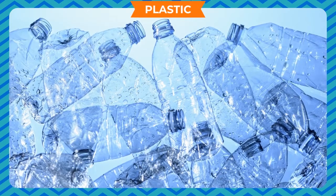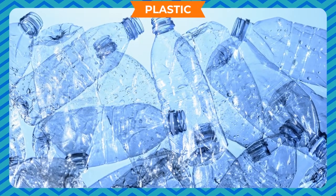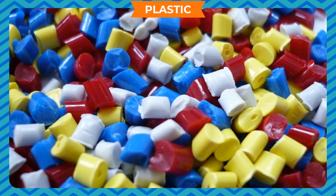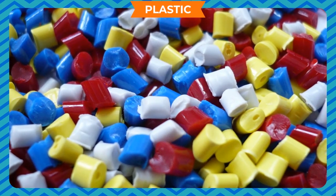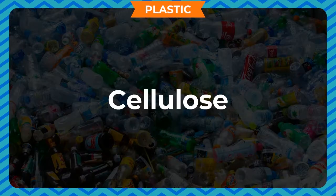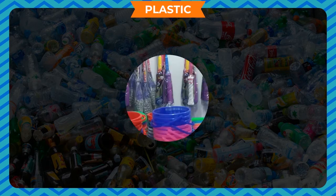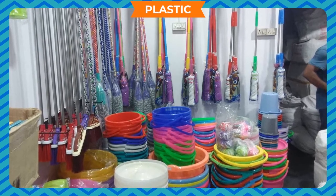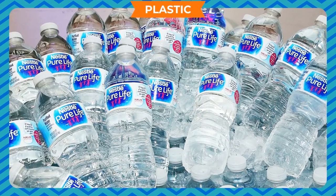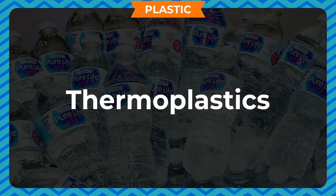Plastic refers to a material which can be molded into the desired form. Plastics are man-made materials made up of long-chain molecules called polymers. Some naturally occurring polymers are cellulose, cotton, silk and wool. There are various articles in our day-to-day life made of plastic. The various types of plastics are thermosets, elastomers and thermoplastics.